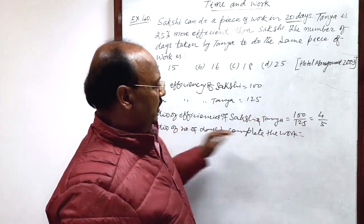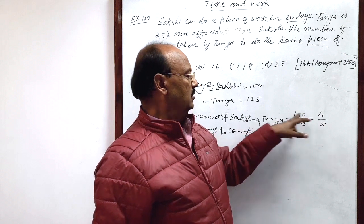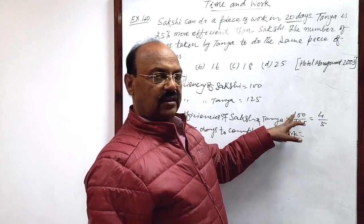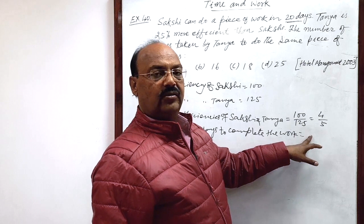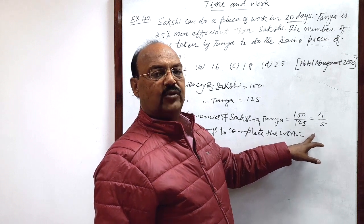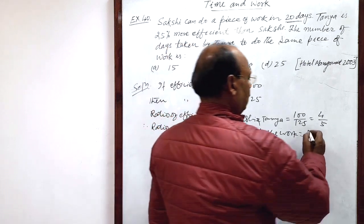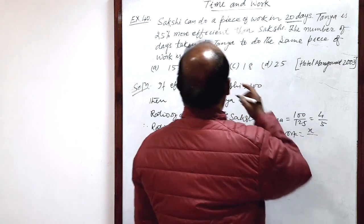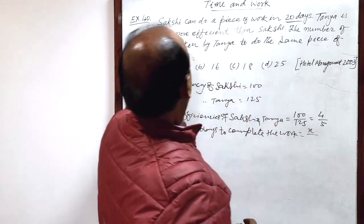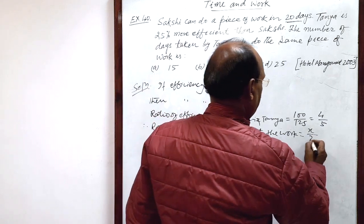means in numerator this is efficiency of Sakshi, then here in numerator we will write number of days required by Tanya. So let us suppose this is x and days required by Sakshi is 20.